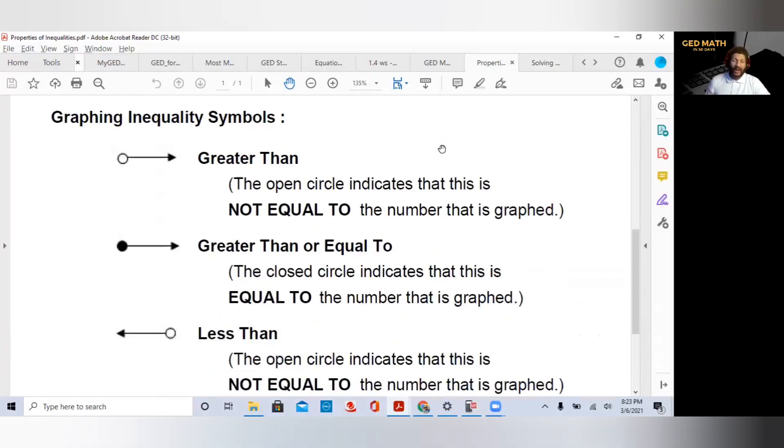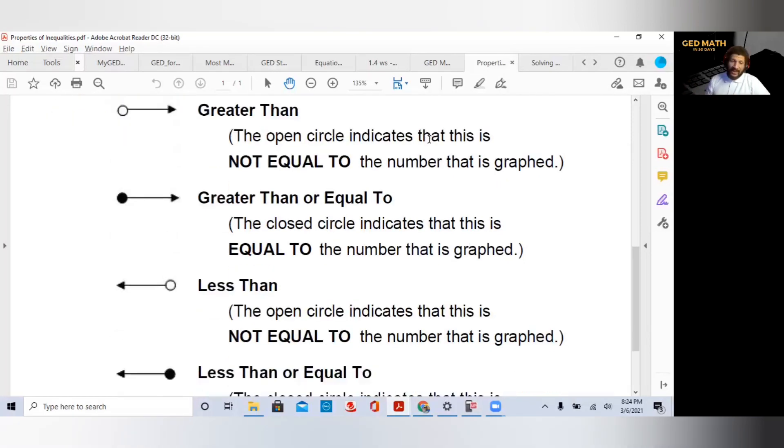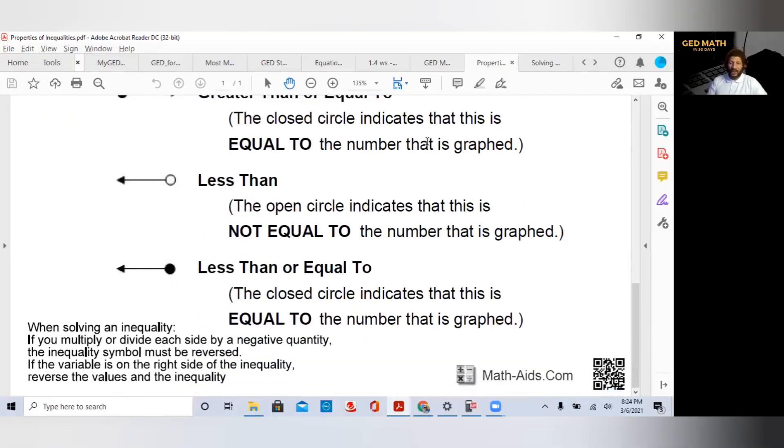You should be familiar with how to graph an inequality on a number line. An open circle indicates that it's not equal to. A solid circle indicates it's greater than or equal to. Greater than, your arrow is to the right. If it's less than, your arrow is to your left.